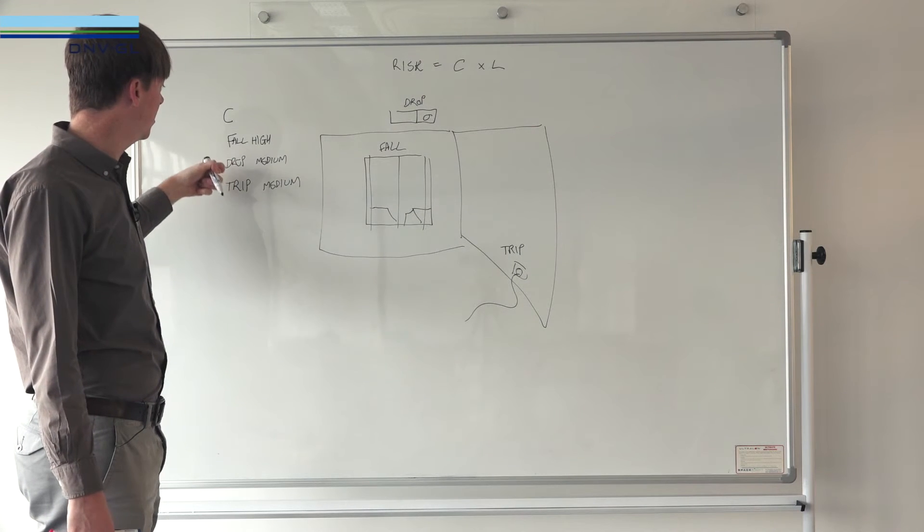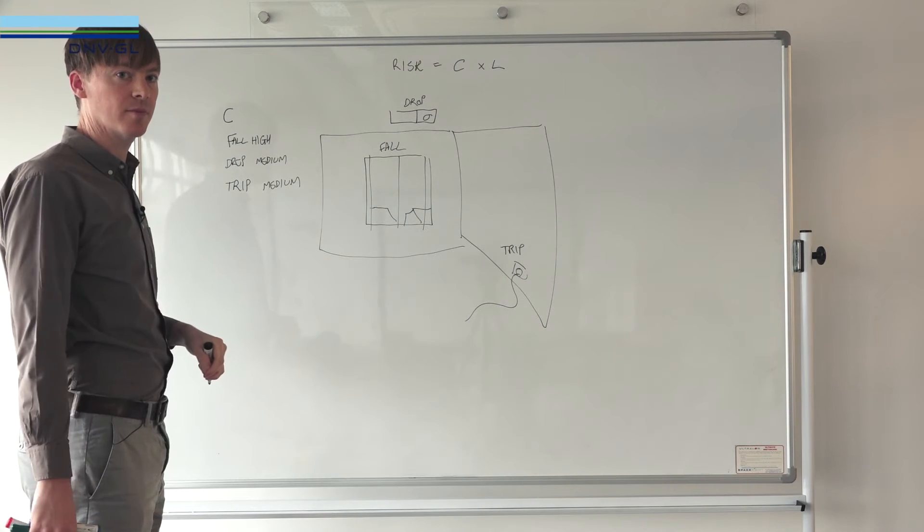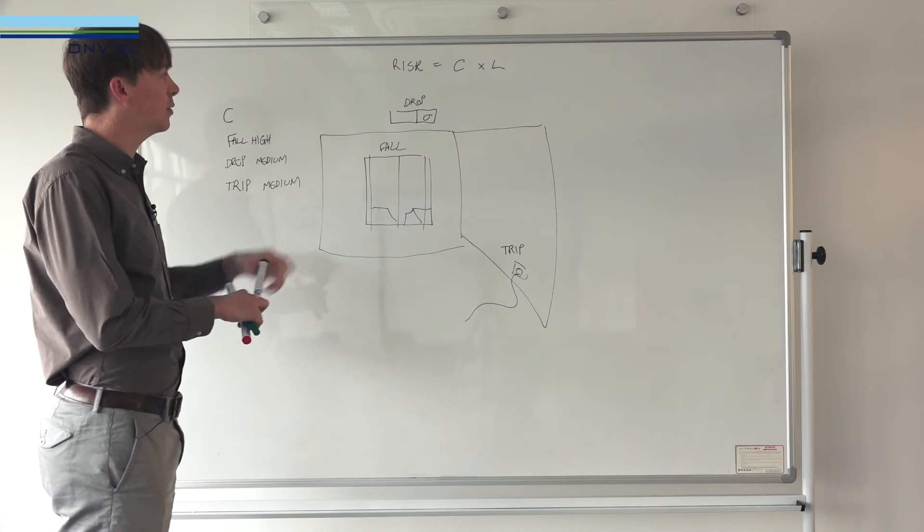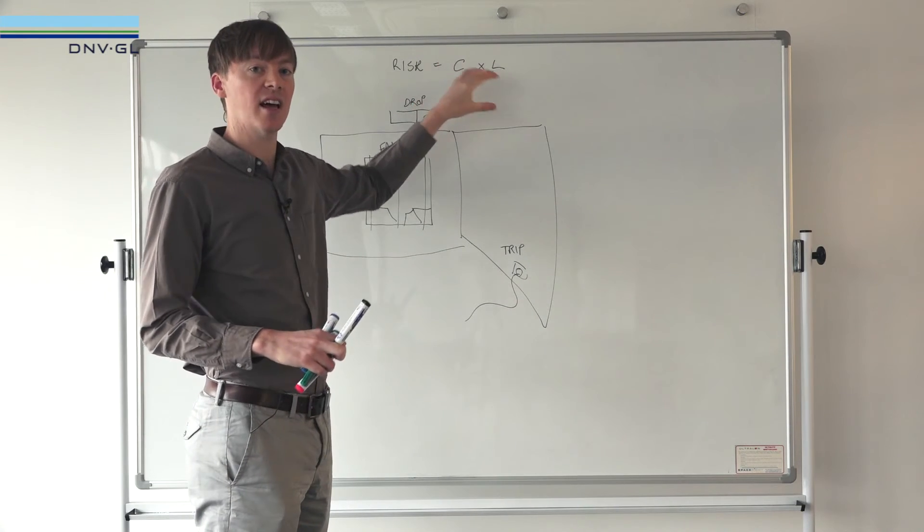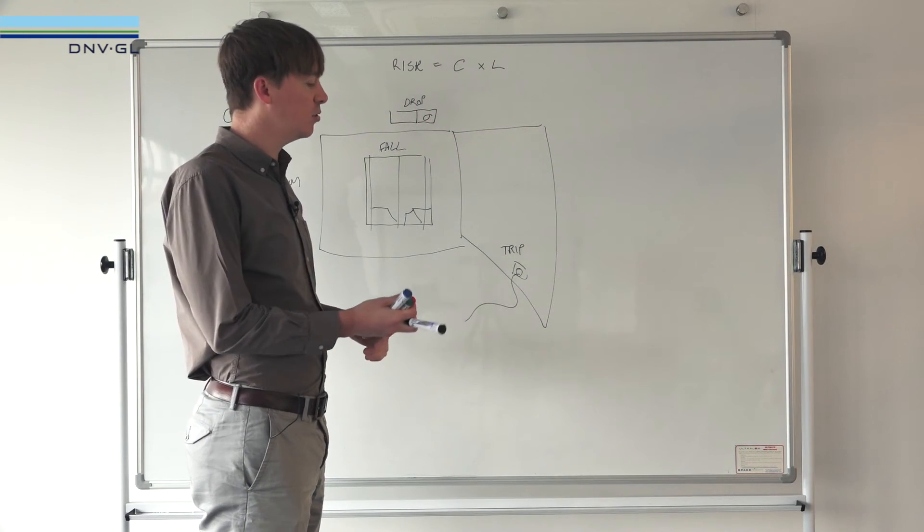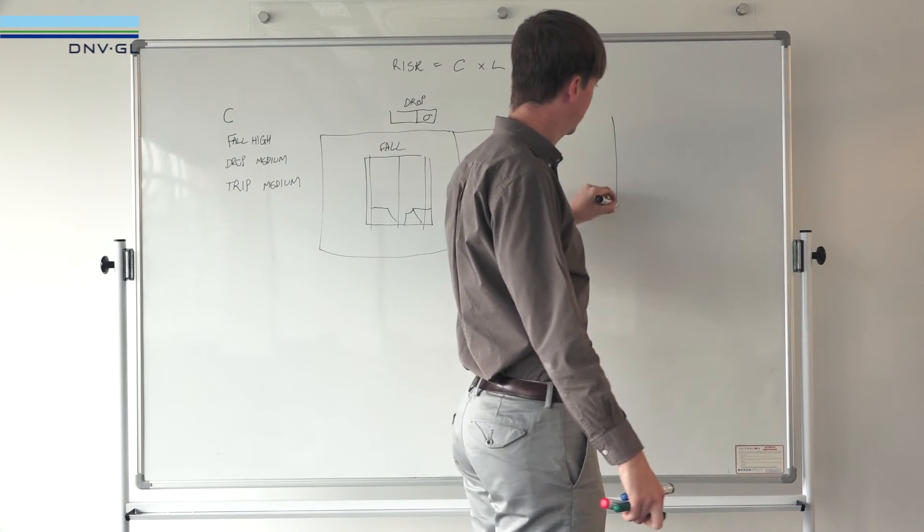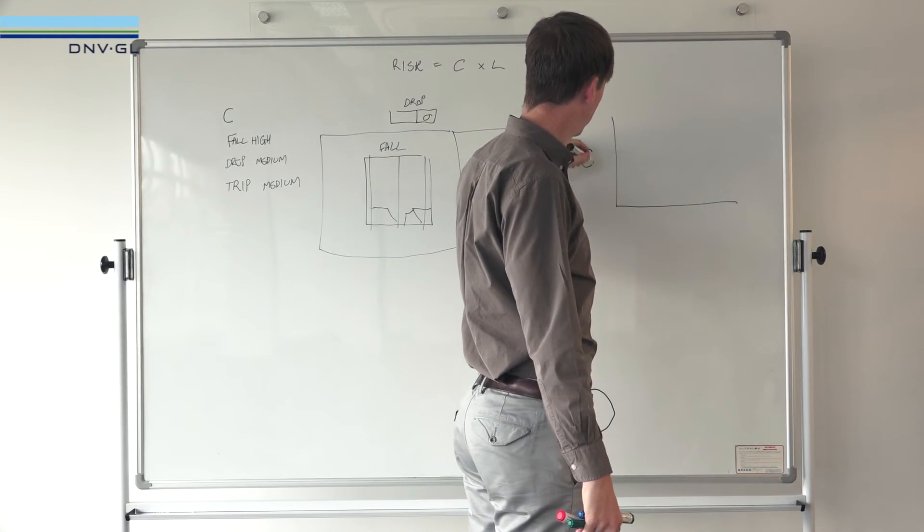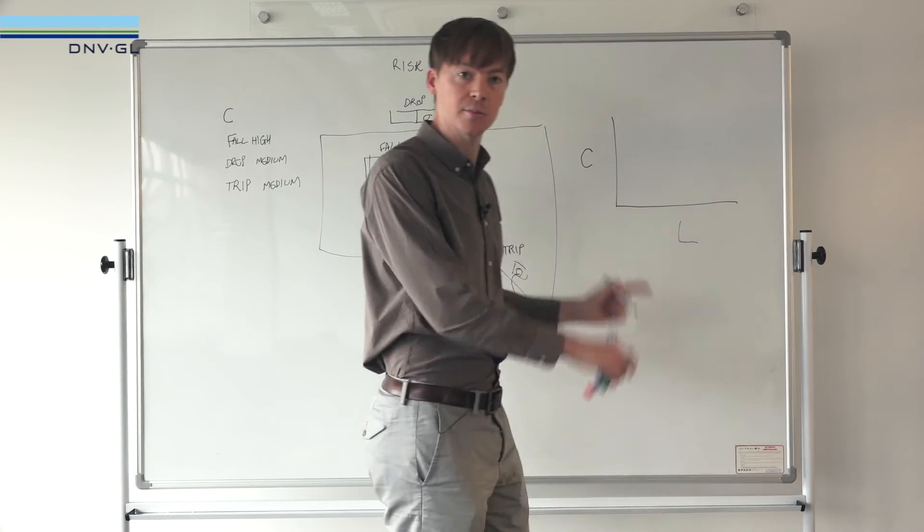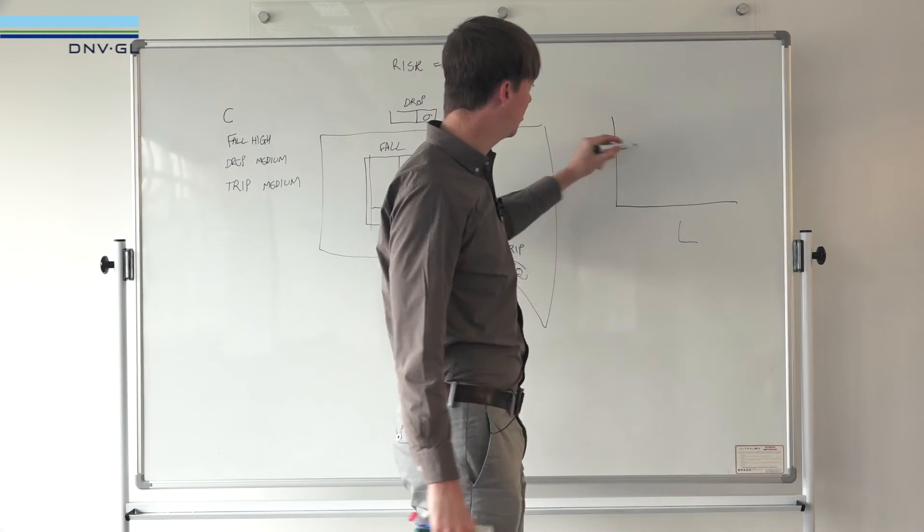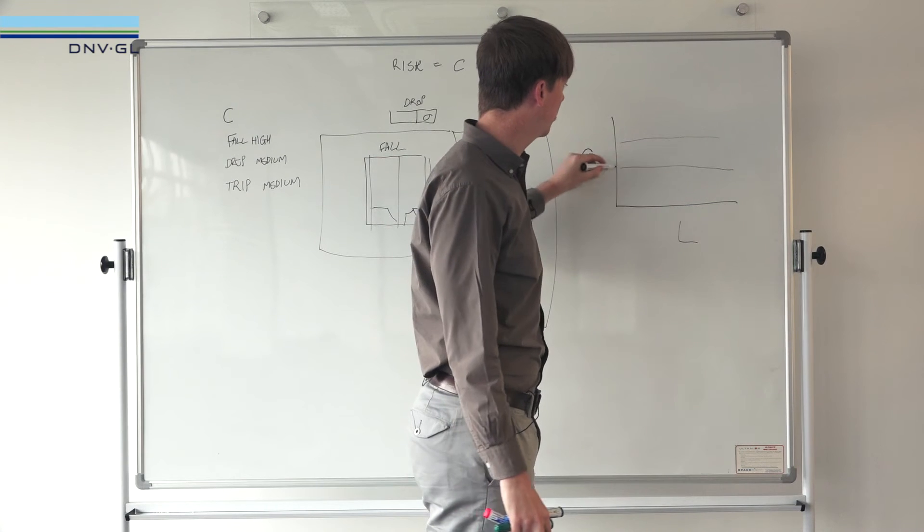That gives us a hazard ranking - falling is high, drop and trip kind of even. But then if we start to think about risk and the likelihood of these things happening, it's useful to put things into a risk matrix. You have consequences on one axis, likelihood on the other axis.